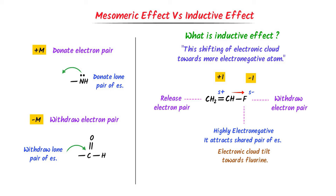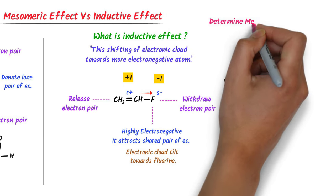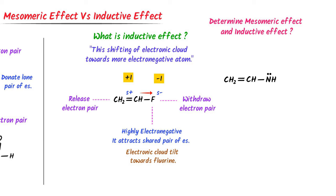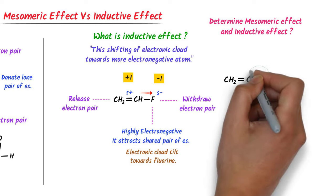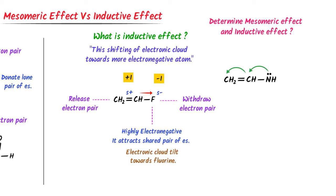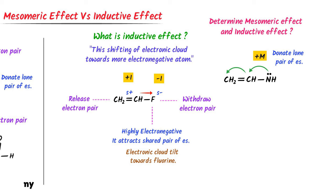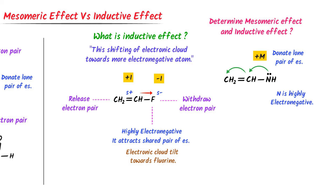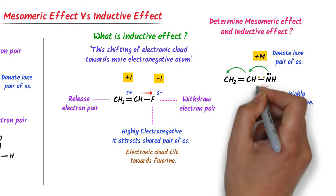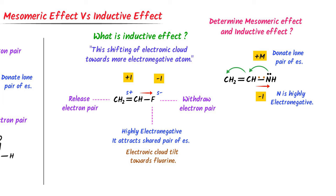If you want to learn more about inductive effect, watch our lecture — the link is given in the description. Now consider this organic compound. There is a possibility that the lone pair of this functional group can be donated into the conjugated system through resonance — this functional group donates a pair of electrons, so we call it positive M effect. On the other hand, nitrogen is a highly electronegative atom, meaning it attracts the shared pair of electrons. Due to mesomeric effect, this NH2 group donates a pair of electrons, while due to inductive effect, nitrogen of NH2 attracts the shared pair of electrons — the effects act in opposite directions.